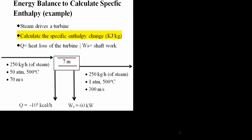In this video, we will calculate a specific enthalpy change in kilojoules per kilogram. In this problem, we have Q, which is going to be heat loss of a turbine, and WS, which is shaft work — the amount of work that the shaft in the turbine is producing.